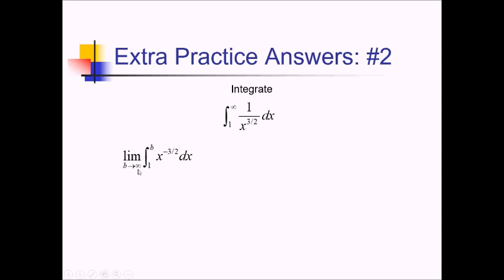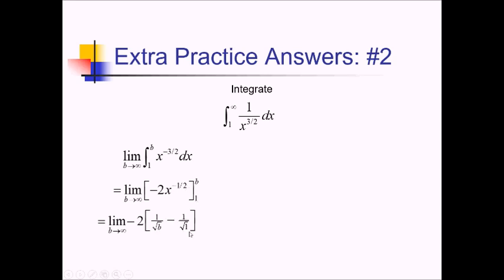Dividing by that, I'm really multiplying by negative 2, so this is going to be negative 2x to the negative 1 half. Still have the limit as b approaches infinity, still evaluating from 1 to b. Taking out a negative 2, inside I've got 1 over the square root of b minus 1 over the square root of 1. As b goes to infinity, the 1 over radical b term goes to 0, so we really have negative 2 times negative 1, which comes out to positive 2.